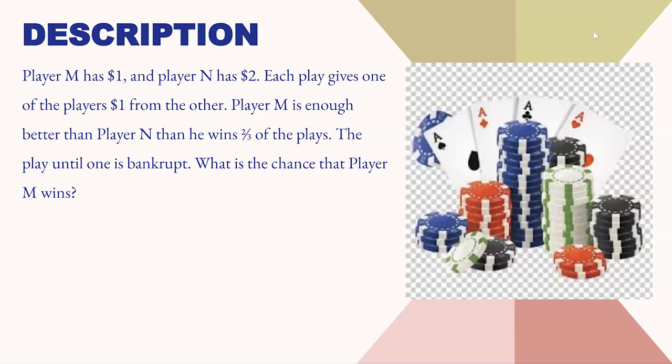In this question, we are given that player M has $1, player N has $2, and there is a game where the loser gives the other player $1. M is a better player than N and his probability of winning is 2/3. This game continues until one of the players becomes bankrupt. So we have to calculate what is the chance that player M wins.